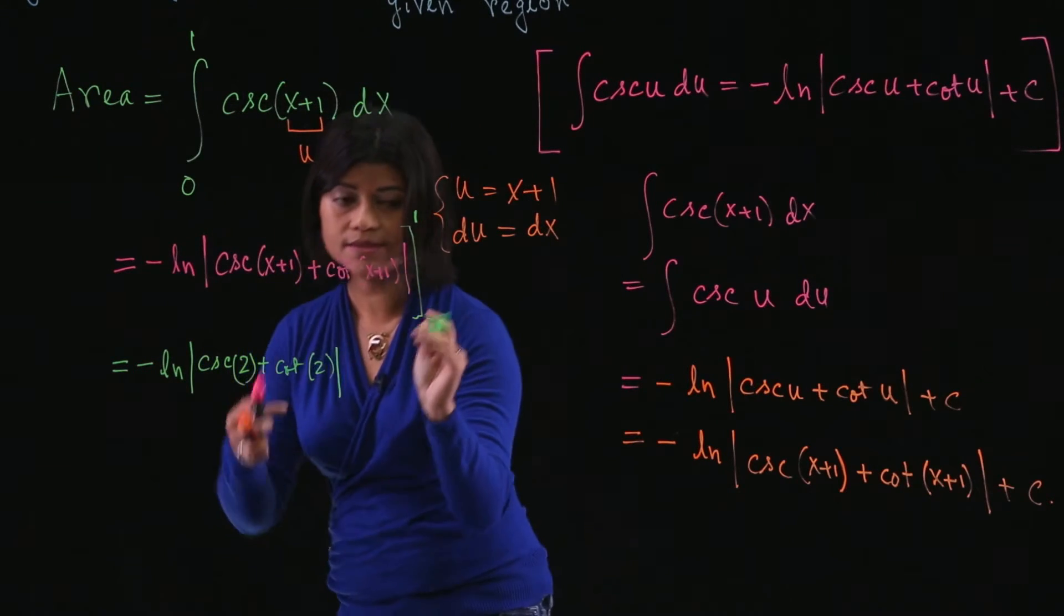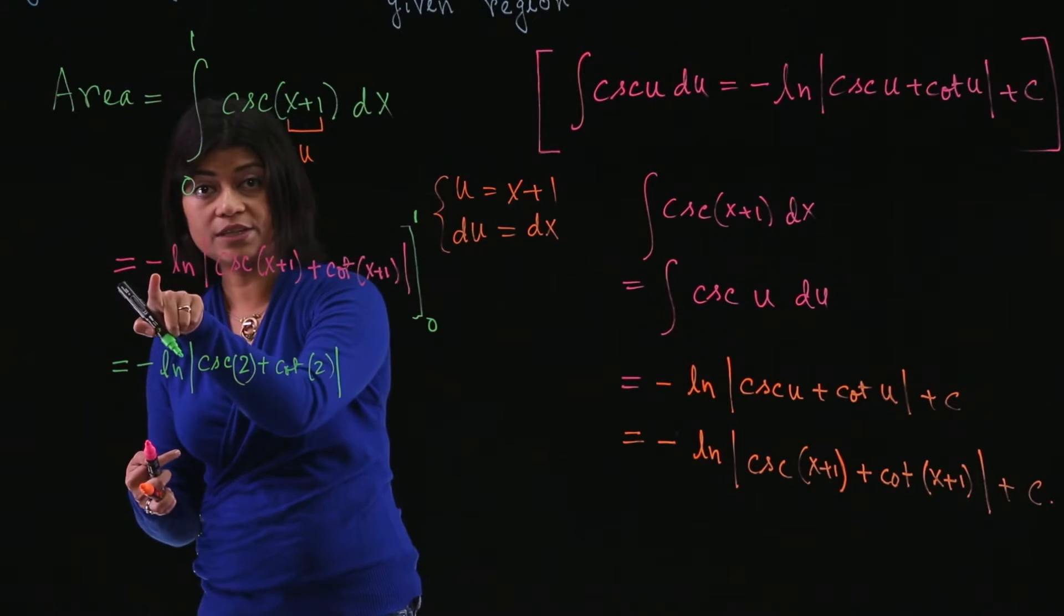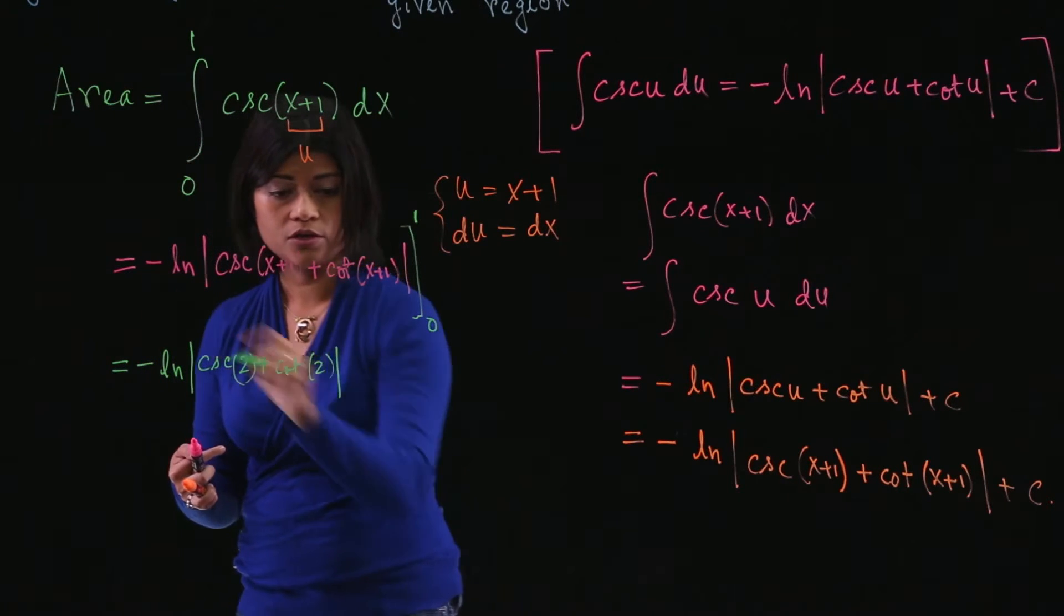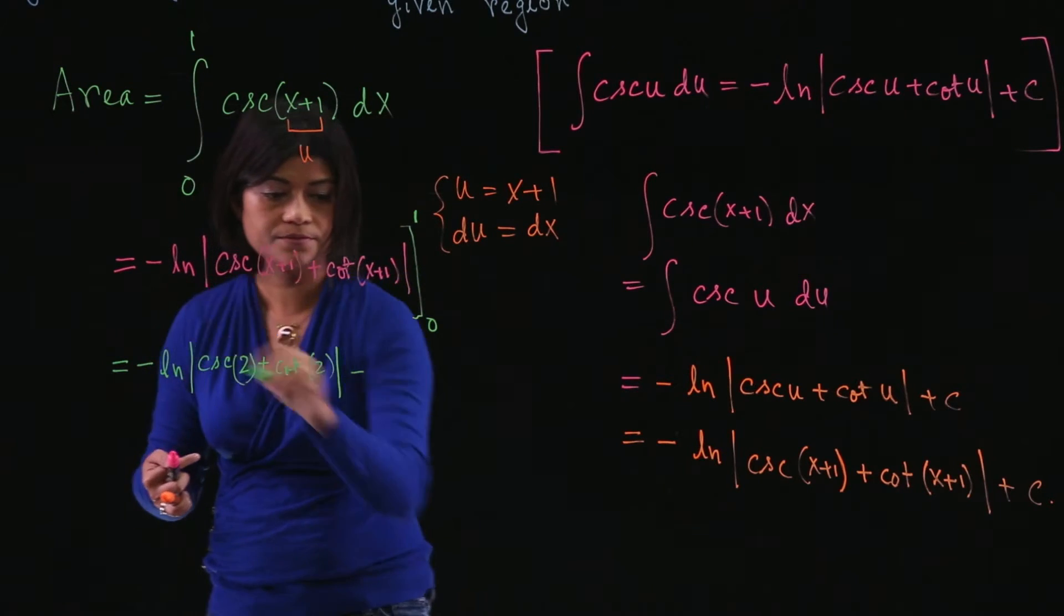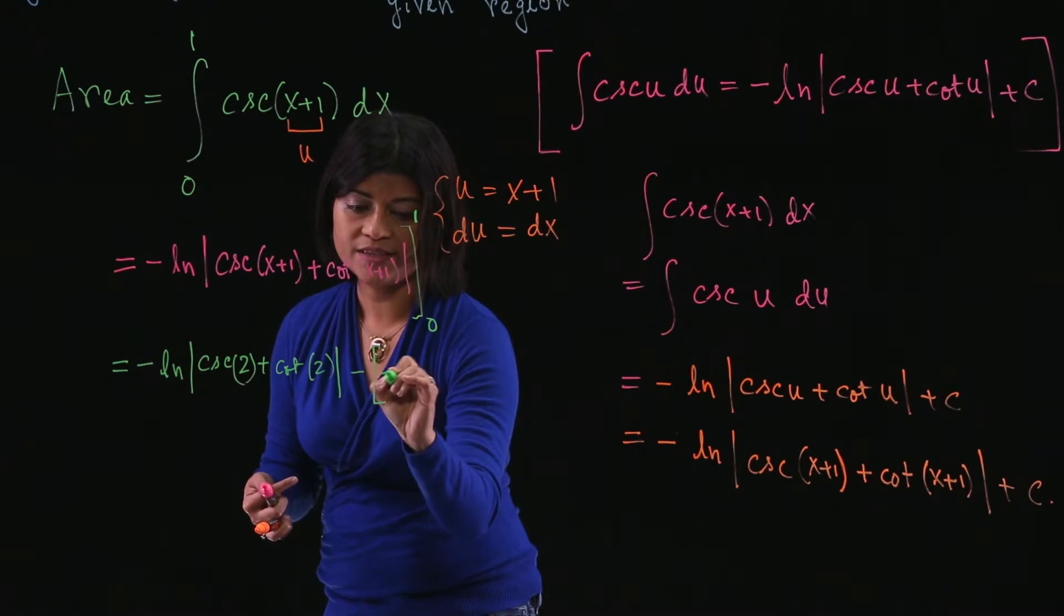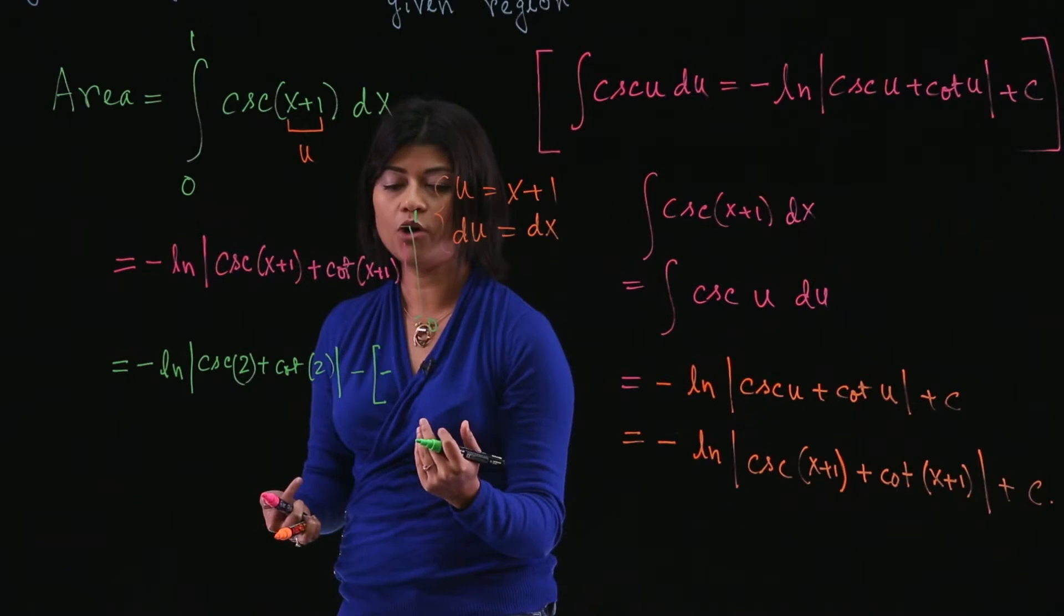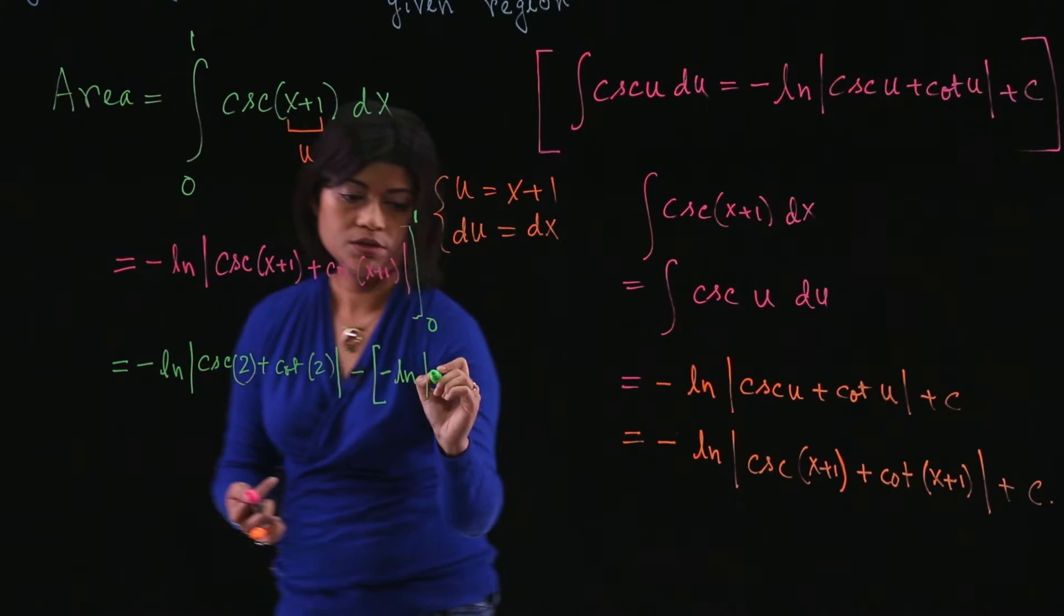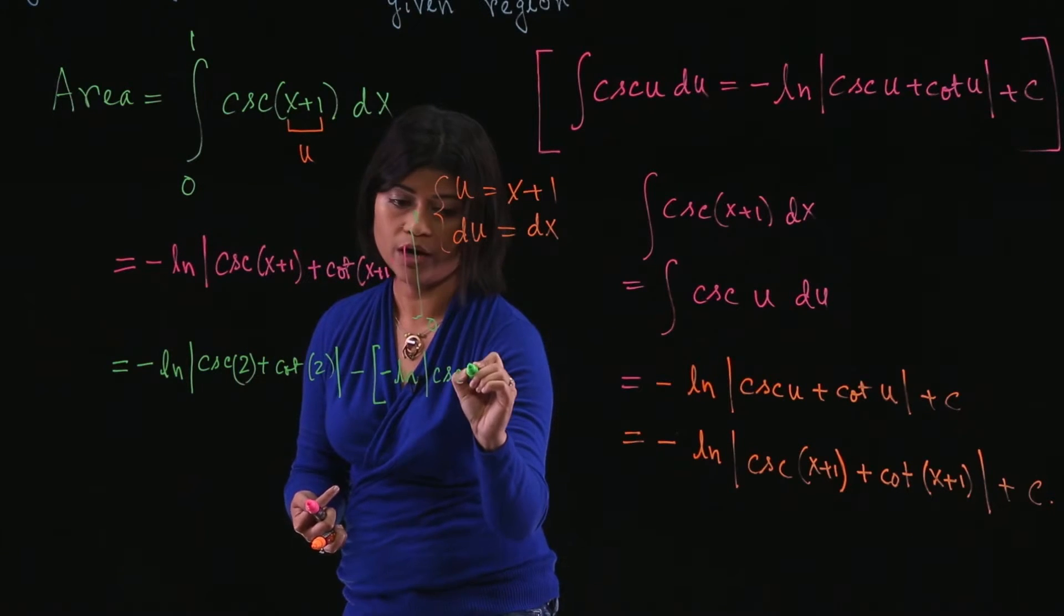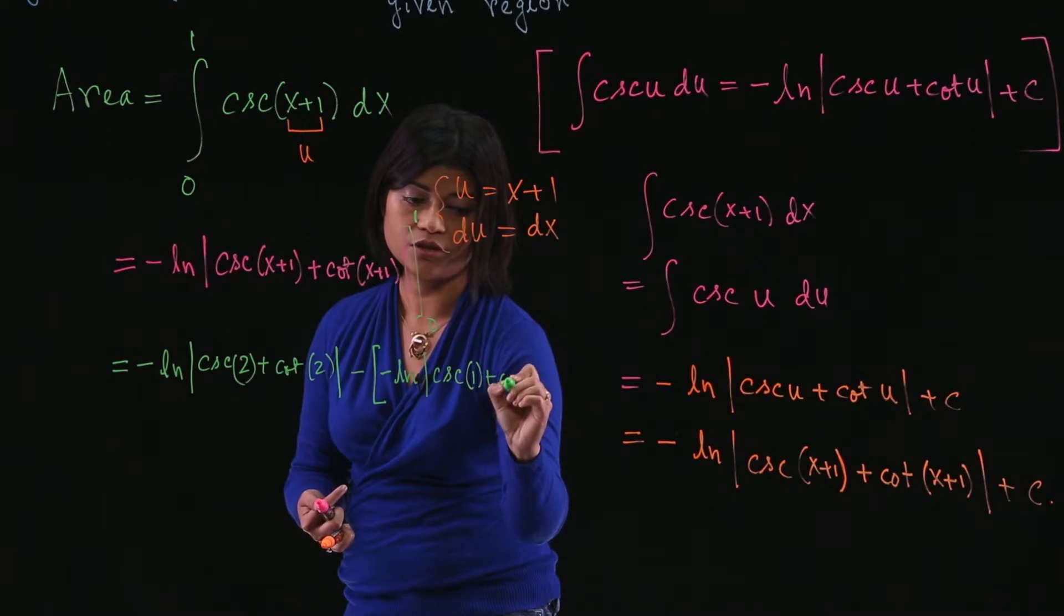Then minus you will plug in 0. But notice that you have a negative sign in the front. So you will have minus of the negative, which means the second term will actually become positive. OK? When you plug in 0, you get cosecant of 1 plus cotangent of 1.